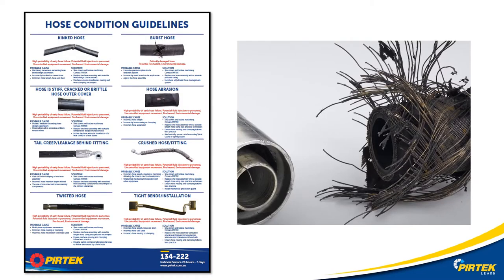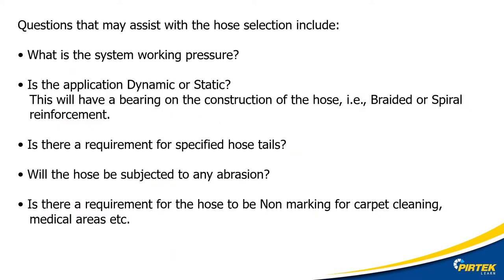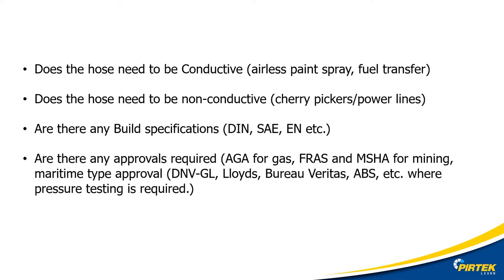Even before we begin the stamped analysis, we need to ask ourselves some questions. Why am I replacing the hose? Why did it fail? Other important information we need to know is the working pressure, the application — is it static or dynamic, in other words, is the hose moving or will it be fixed? Types of hose tails. Is it in a harsh environment? Are the hoses rubbing against each other? Is dirt and rocks and rubble hitting against the hoses? And what industry am I working in? Are there any standards that I need to be working to — DIN, ASE, EN for example? Do I need special approvals, fire ratings, or ratings for mining applications? These are all important in the hose and fitting selection process.